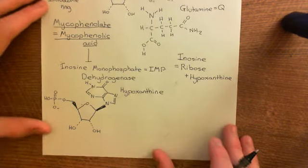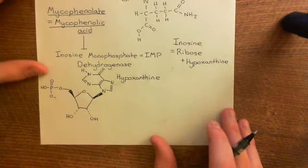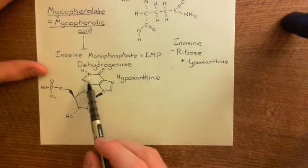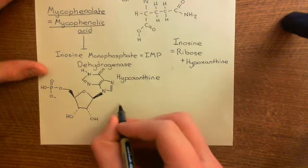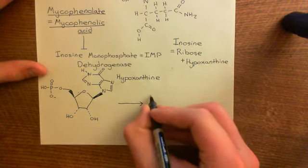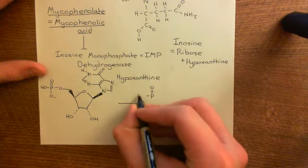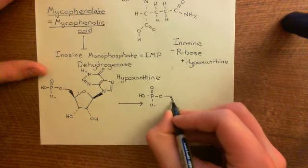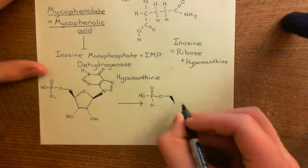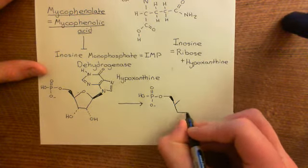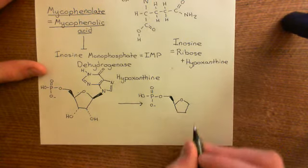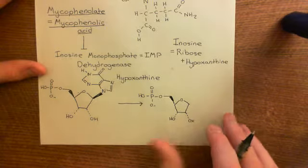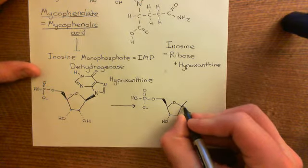Inosine monophosphate dehydrogenase is going to convert inosine monophosphate into xanthosine monophosphate. The way it does this is by changing the organic base from hypoxanthine to xanthine. Let's draw the phosphate group, the oxygen, and the beta-D ribofuranose five-membered ring with the alcohol groups, and then show the structure of xanthine rather than hypoxanthine.